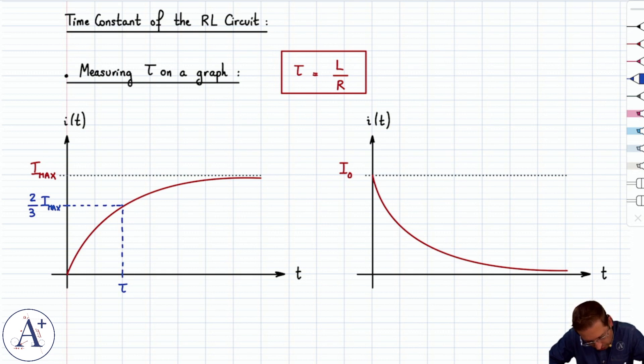You could do the same thing here, except you'd want to drop the value by two-thirds, and so really you'd take I0 over 3 here because you only have one-third left if you drop by two-thirds. And you find the time associated with that value, and that is your time constant, tau.